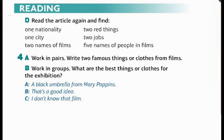Working in pairs, write two famous things or clothes from films. In groups, discuss what are the best things or clothes for the exhibition. A: A black umbrella from Mary Poppins. B: That's a good idea. C: I don't know that film.